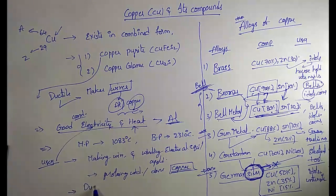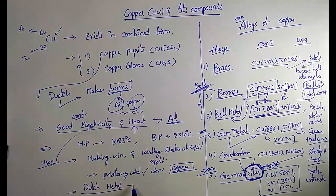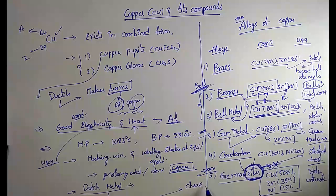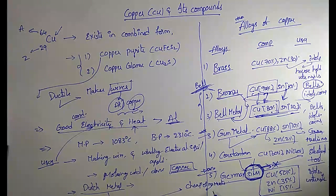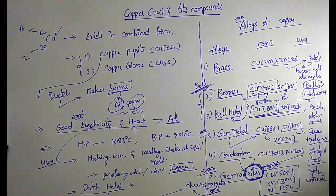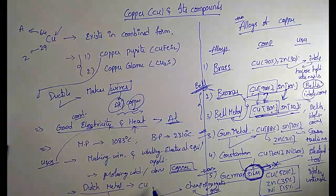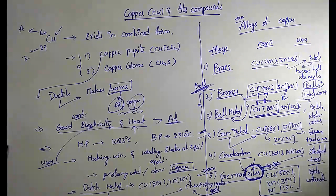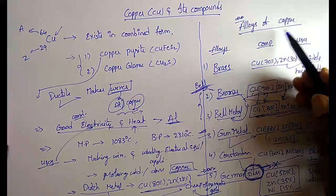The next alloy is Dutch metal. Dutch metal is used for making cheap ornaments because its color resembles gold. In Dutch metal, the composition is copper 80% and zinc 20%. These are the very important alloys of copper.